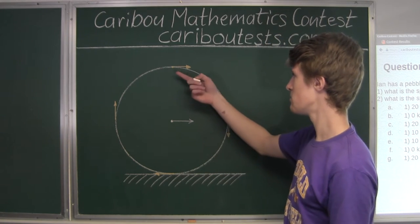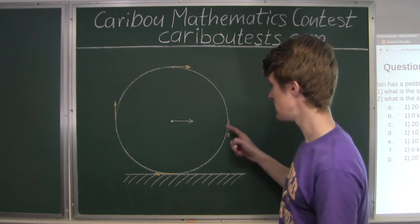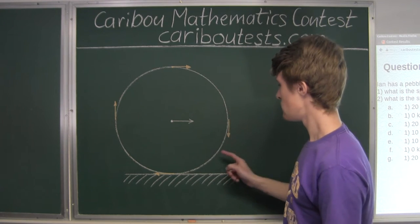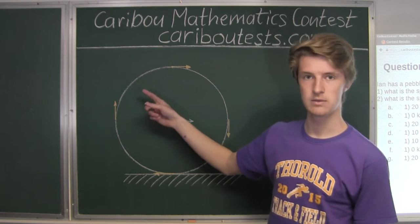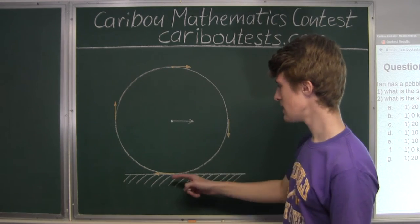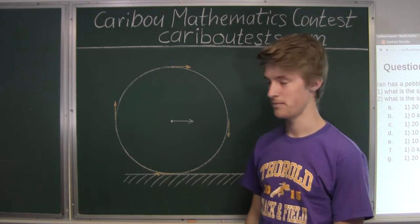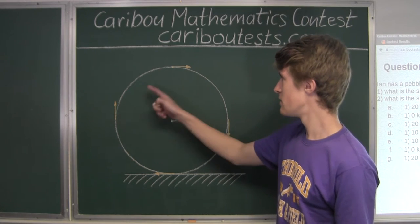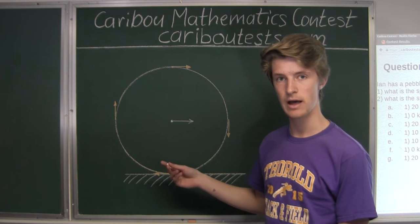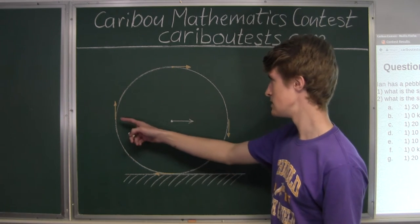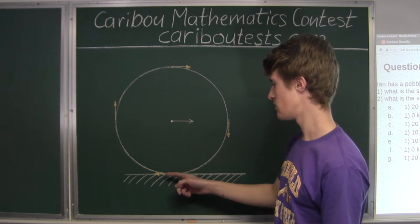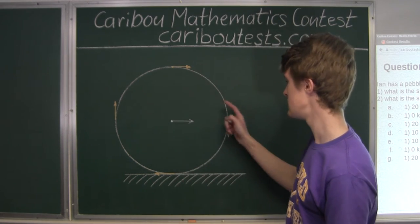Now let's look at the circular motion of the pebble in relation to the bike frame. These orange vectors represent the velocity of the pebble in relation to the bike frame at different points in time. The lengths of the vectors are constant, which means the absolute value of the velocities is also constant, and only the direction changes — left, up, right, down, and so on.